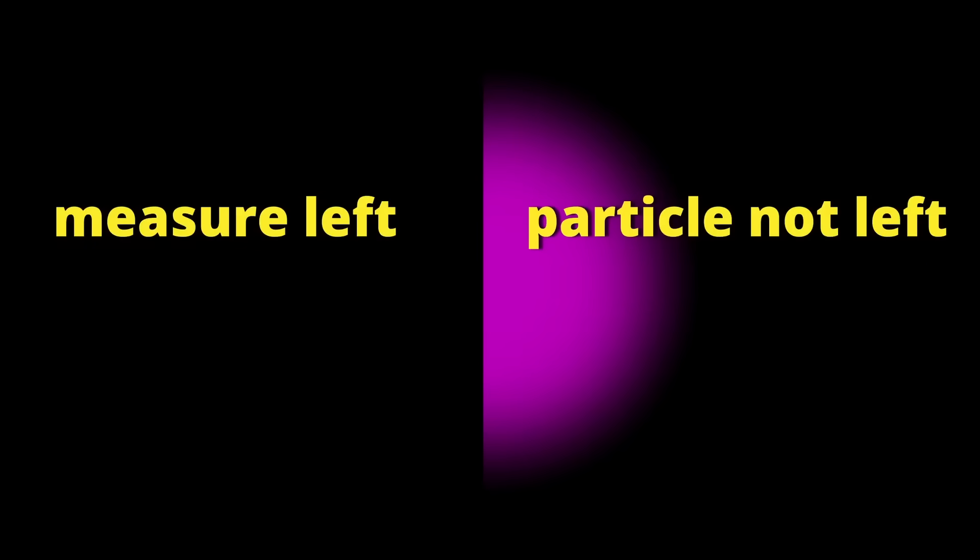Say you measure only one side of the box and do not find the particle there. Then you know it's on the other side, even though you didn't touch the particle. You can do this, for example, by shining light onto one side of the box. Then you measure whether any of the light changed direction. If it did, you know the particle's there. If it didn't, you know it's on the other side.